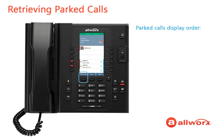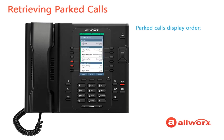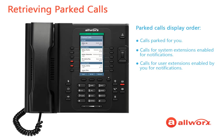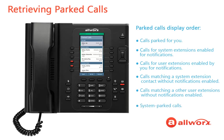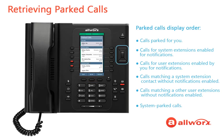At any time, you can press the Parked Call soft key on your Verge phone home screen to see the list of Parked Calls. The Parked Calls display in the following order: calls parked for you, calls for system extensions enabled for notifications, calls for user extensions enabled by you for notifications, calls matching a system extension contact such as the sales department without notifications enabled, calls for user extensions without notifications enabled, and lastly system parked calls. You can press the By Me soft key to narrow the list to only calls parked from your Verge phone, or press the All Calls soft key to return to the full Parked Calls screen. Use the up and down navigation buttons to locate and highlight the parked call, then tap the Retrieve soft key or the Select button to retrieve the call. After retrieving the parked call, you can manage or end the call as usual.